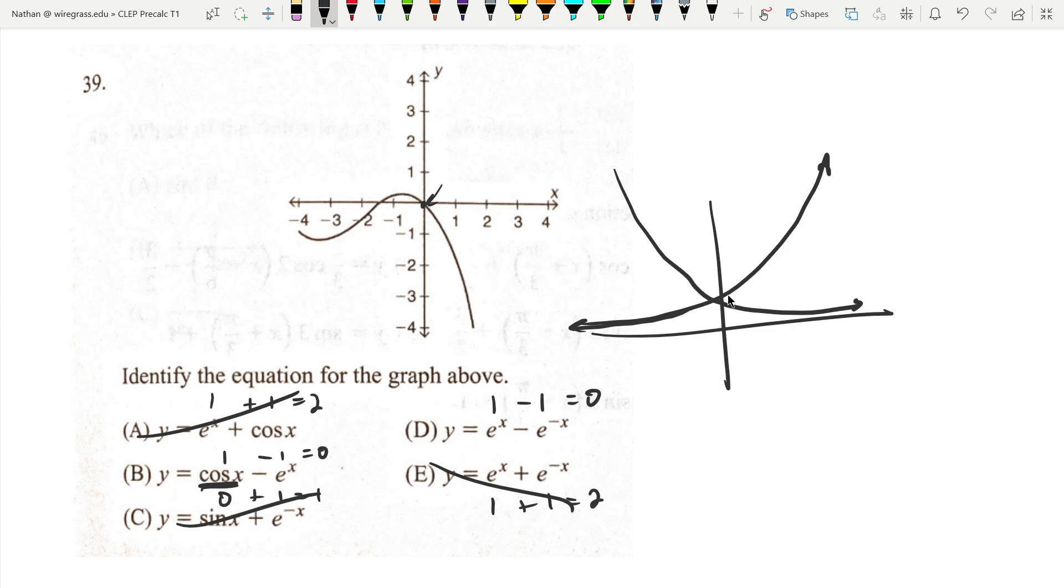On the right-hand side, e^x shoots up to infinity very quickly, so cosine is not going to be able to do much. That's why you have this pretty much exponential look on this side.